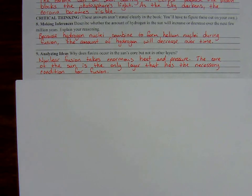So number nine. Here we're going to be analyzing some ideas. Why does fusion occur in the Sun's core but not in the other layers? For example, the radiative zone, the convective zone, the photosphere, the chromosphere, or the corona. Why only the core?